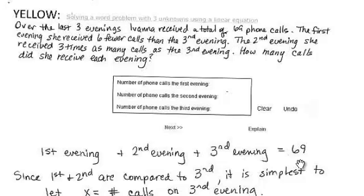I've got to decide what's going to be X, and I usually try to make X be the thing that's appearing in the end of sentences. Notice that this sentence says the first evening she received six fewer calls than the third evening. The third evening amount is appearing at the end of a sentence. The second evening is also being compared to the third evening.